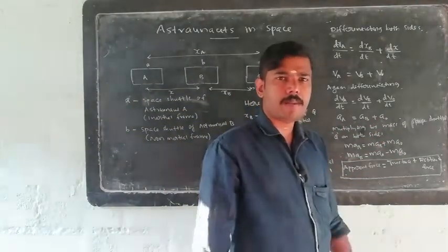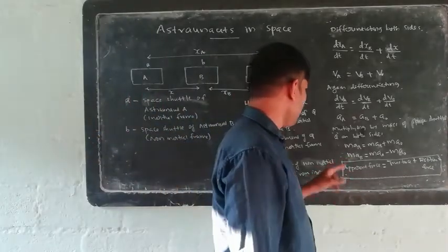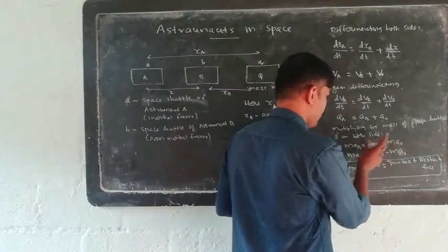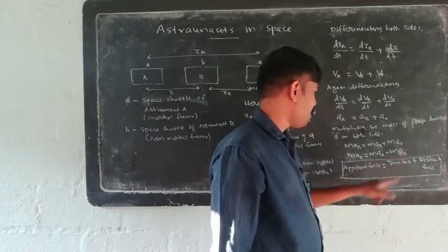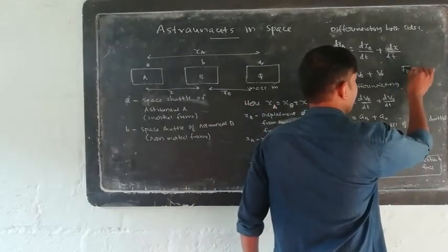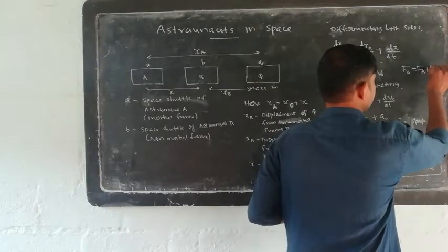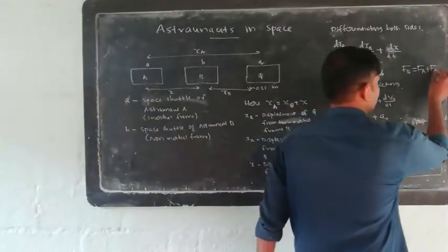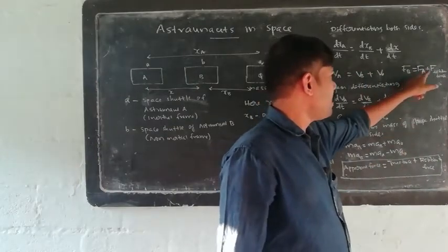Now we multiply this equation by m, the mass of space shuttle Q. So, m·a_a equals m·a_b plus m·a_0. Rearranging: m·a_b equals m·a_a minus m·a_0. Therefore, F_b equals F_a minus m·a_0, which equals F_a plus fictitious force.